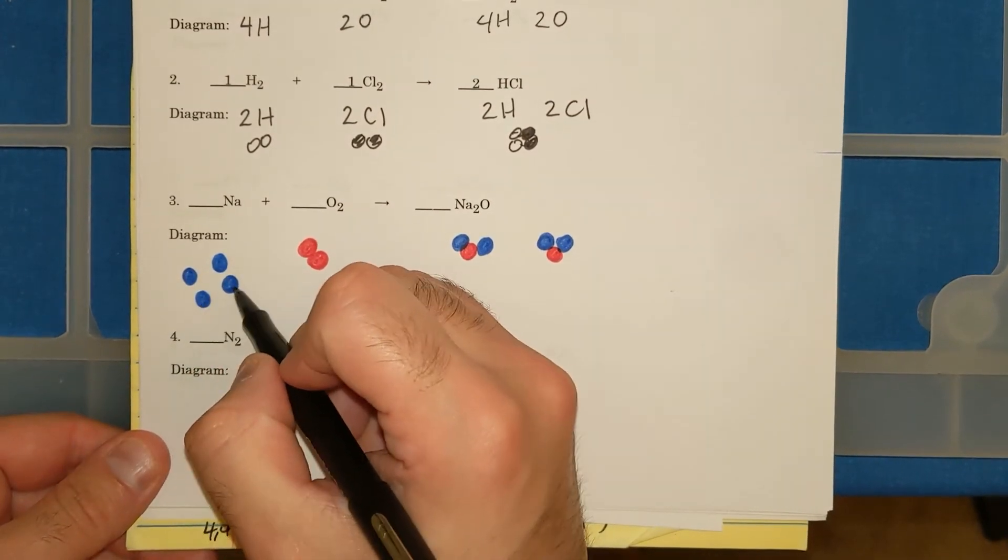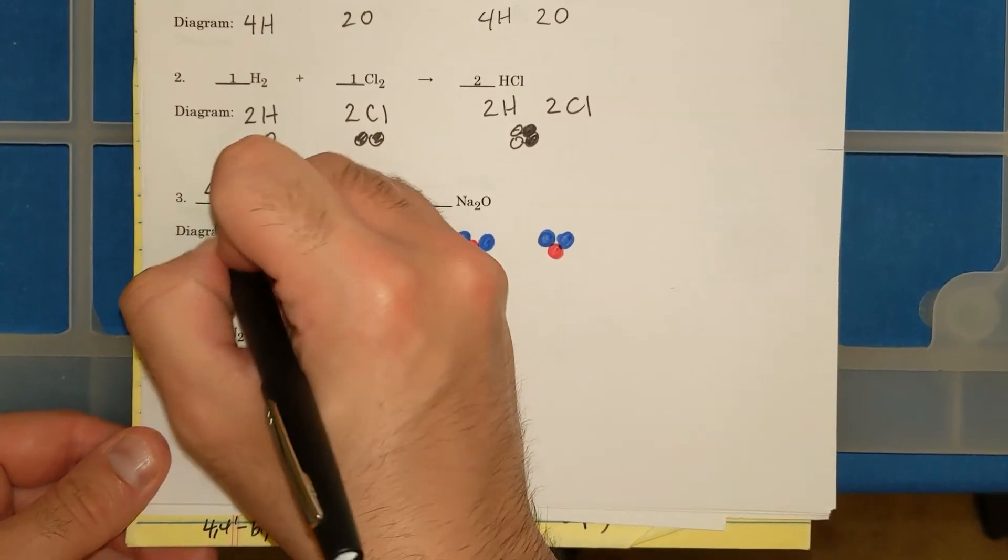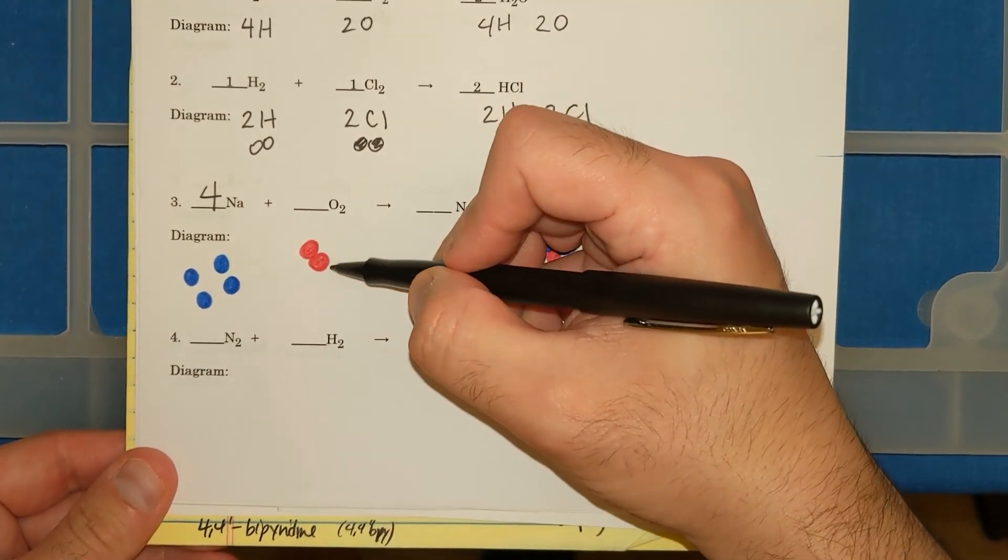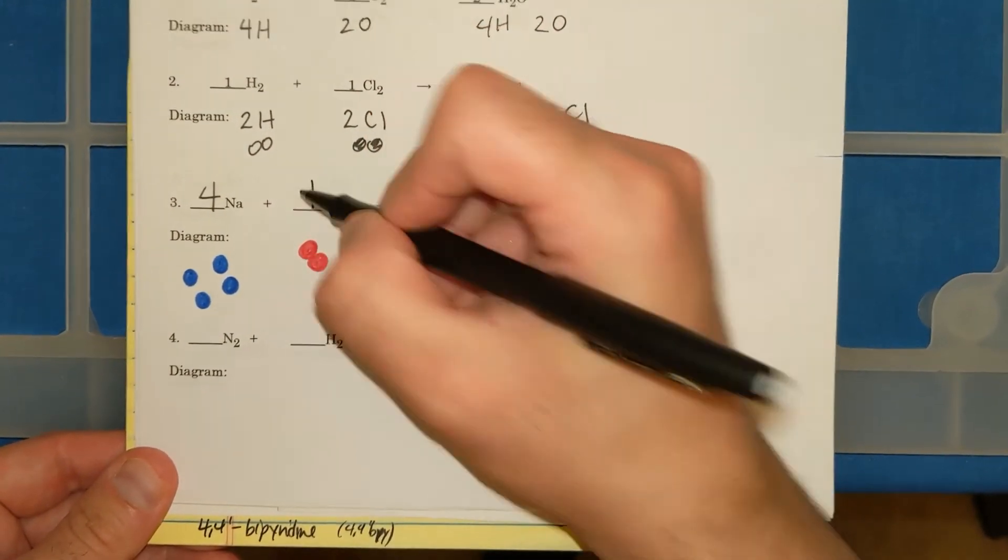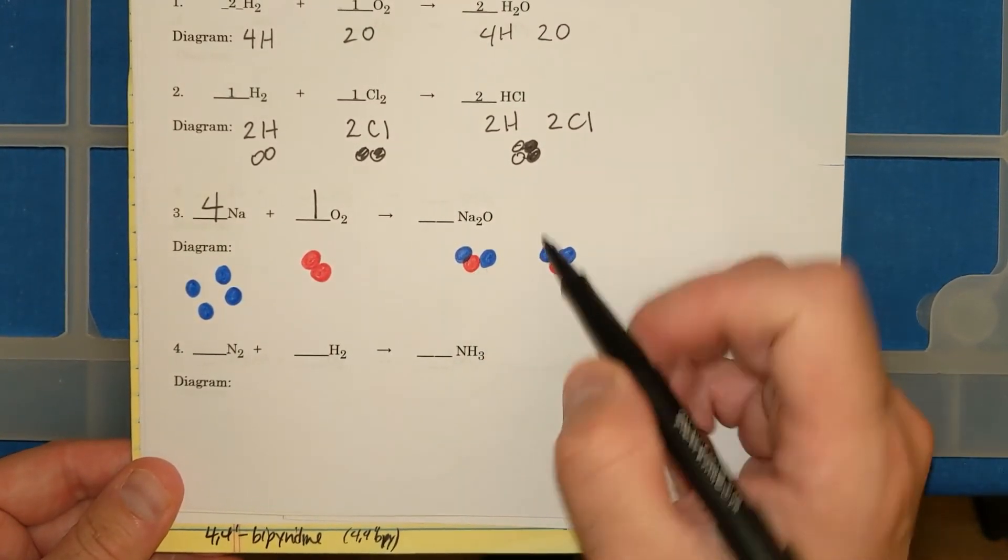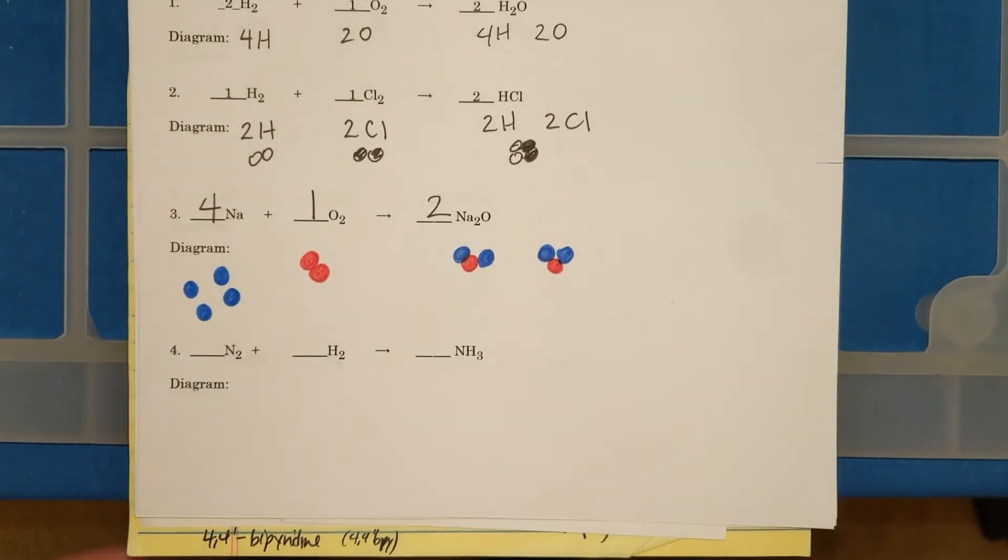There are 1, 2, 3, 4 Na's. That's going to be 4Na. How many O2's are there? There is 1 O2. How many Na2O's? There are 1, 2 Na2O's.